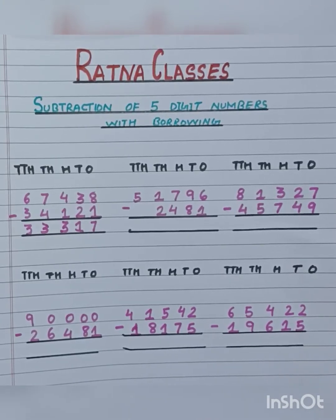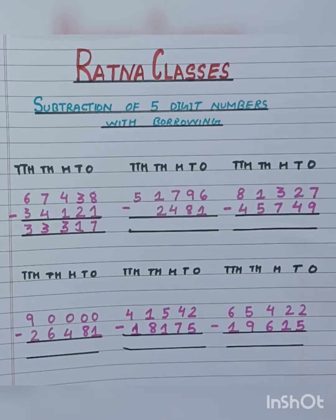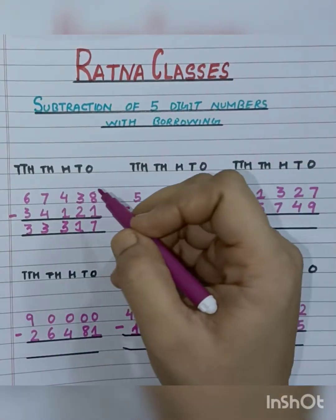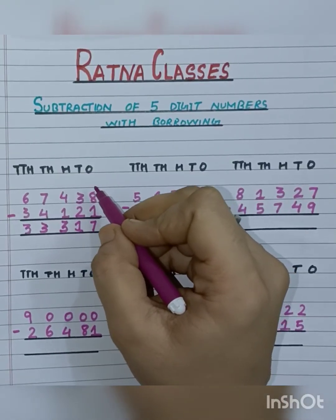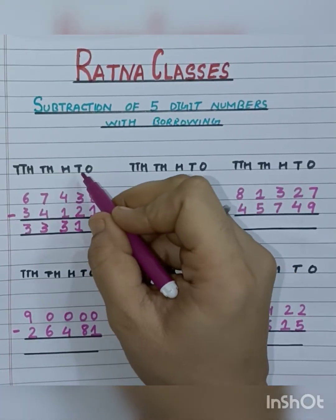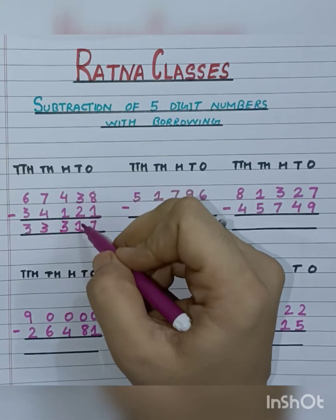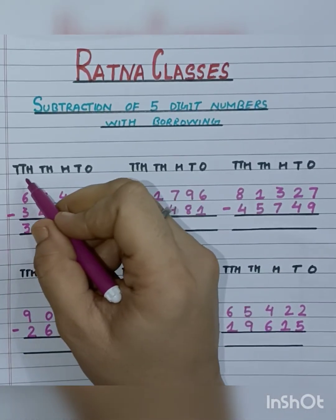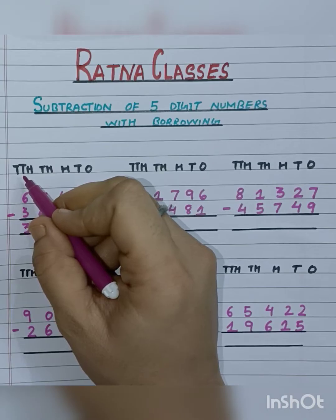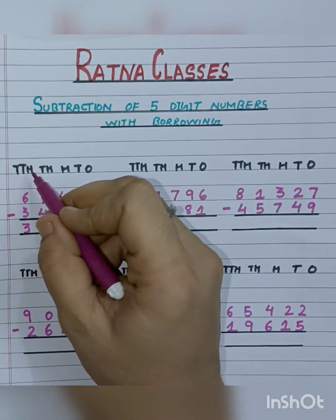Hello students, welcome to Ratna Classes. Today we will study subtraction of 5-digit numbers with borrowing. As I already mentioned in the previous video, first we will subtract the number given at the 1's place, then at the 10's place, then at 100, then at 1000, and at last we will subtract the number given at the 10,000 place.